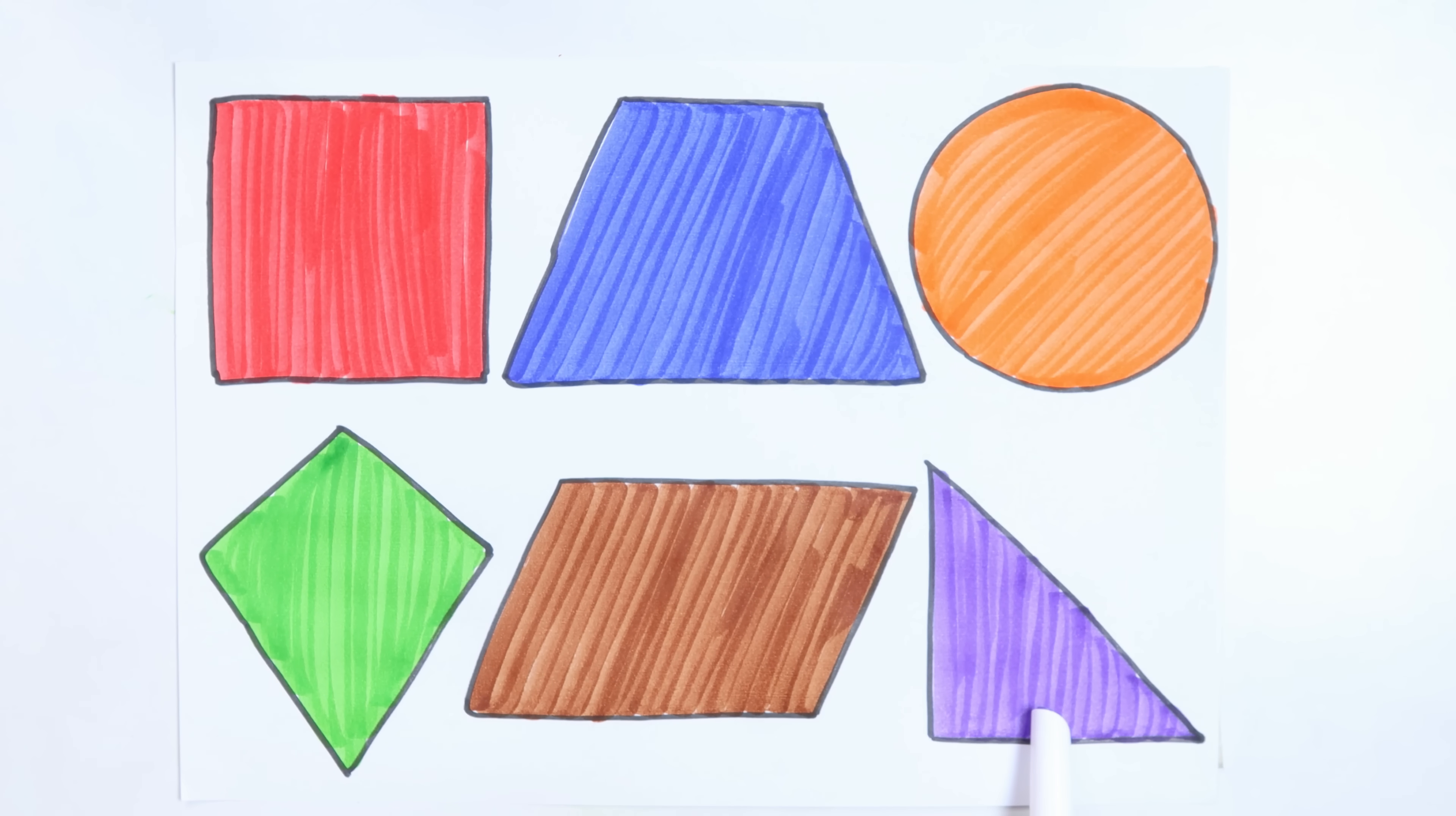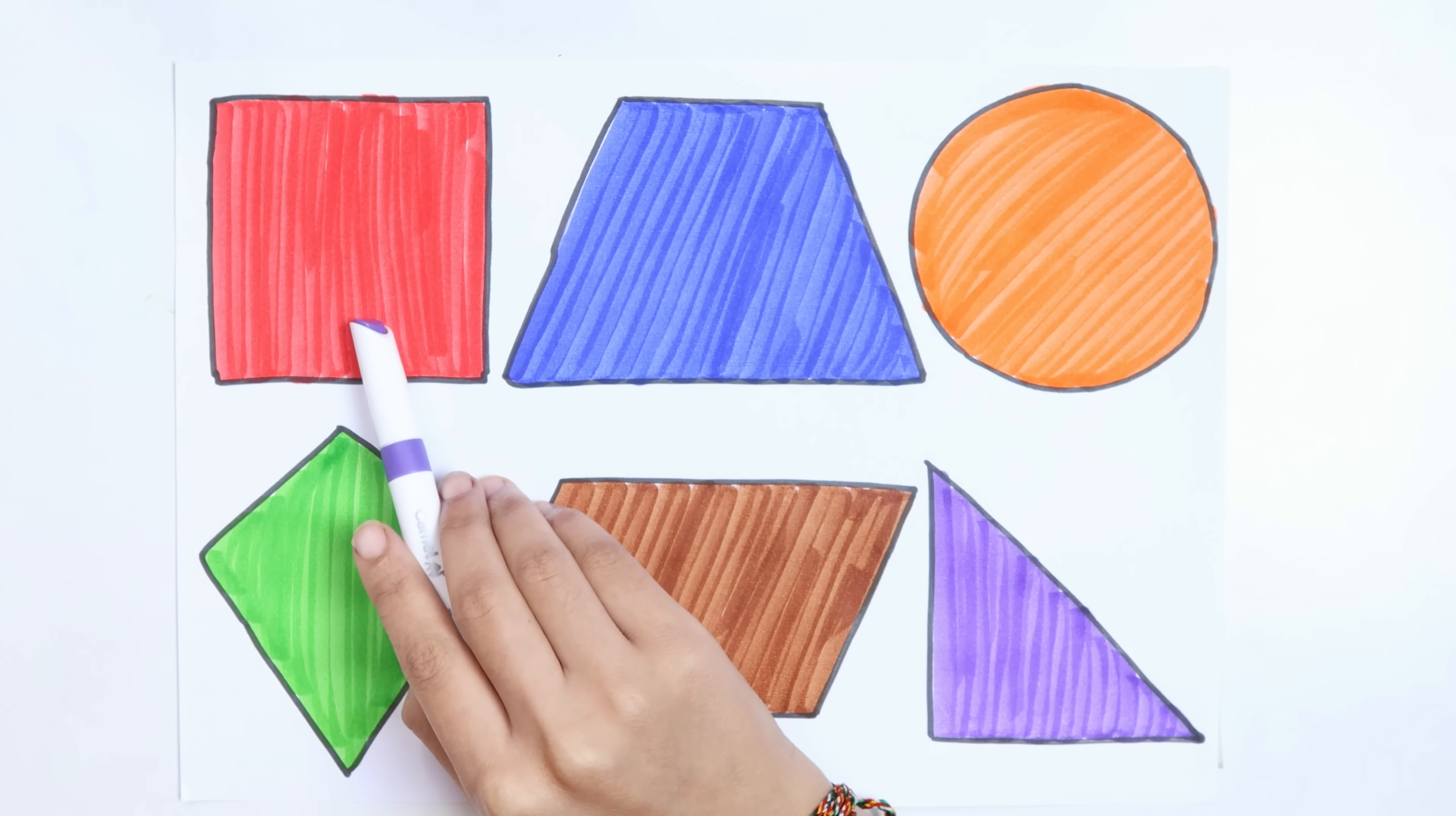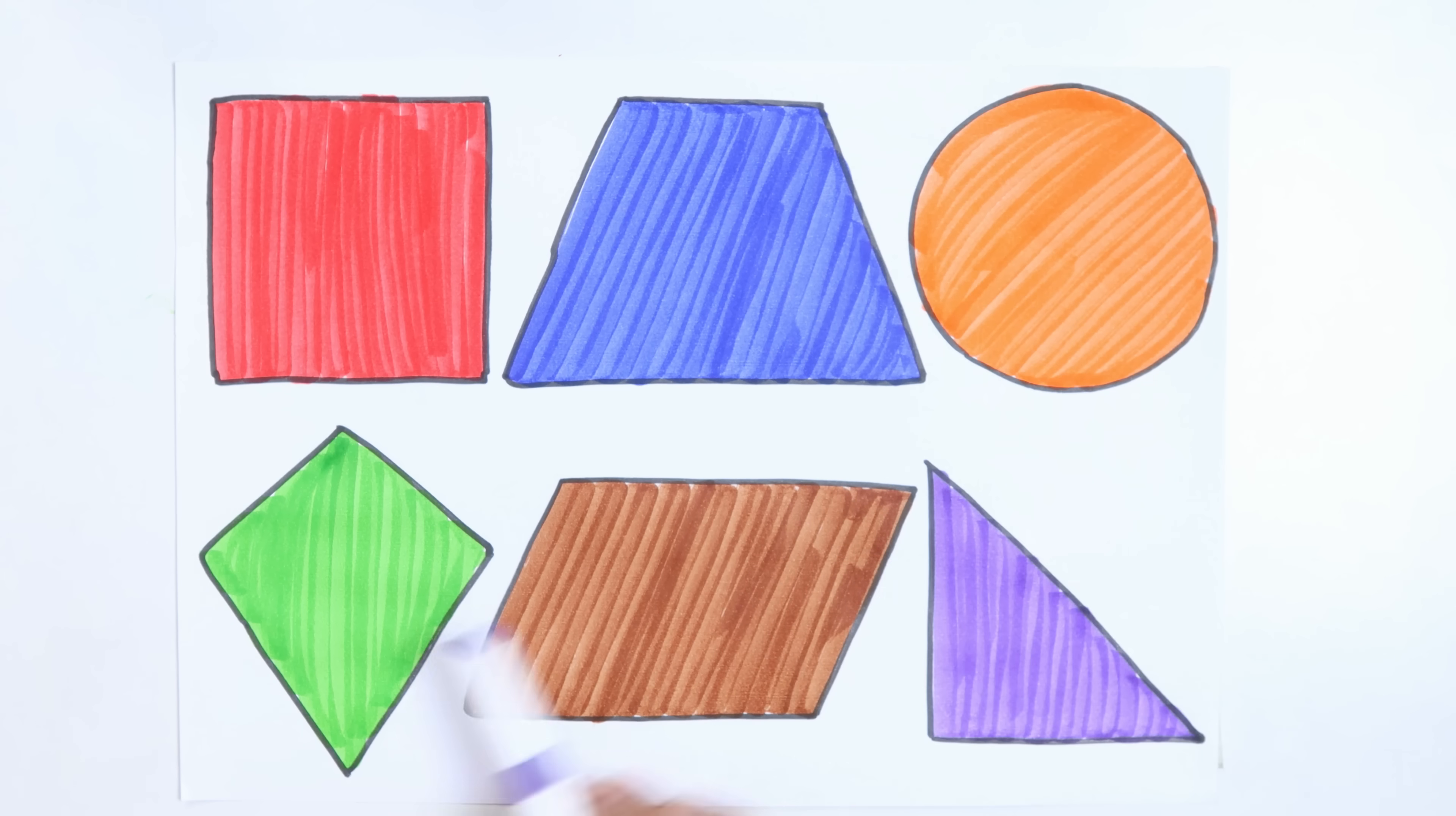Right triangle. Square, trapezoid, circle, kite, parallelogram.